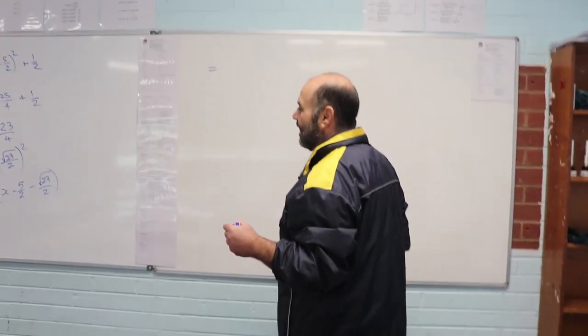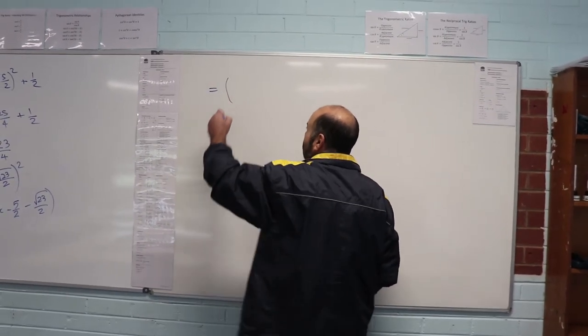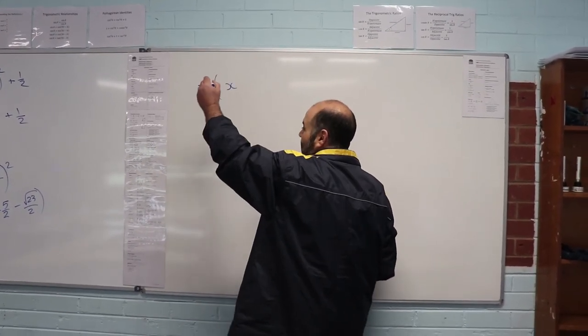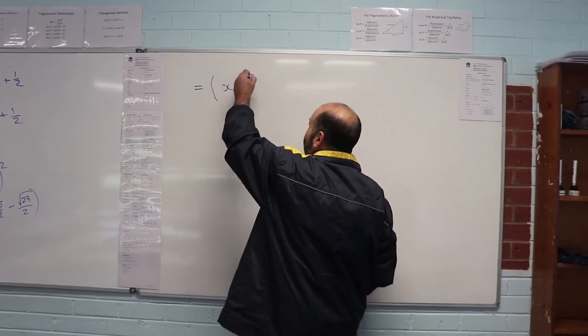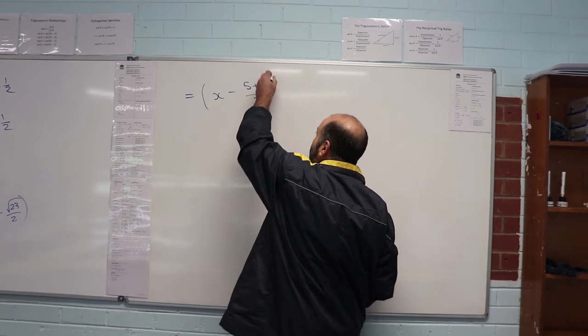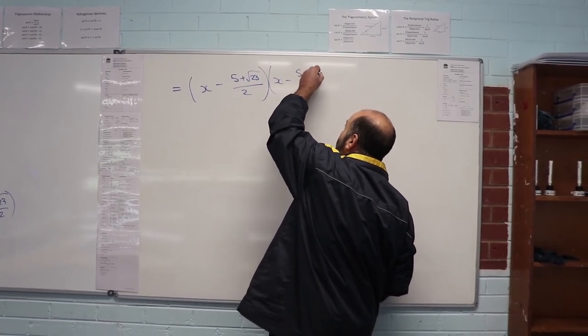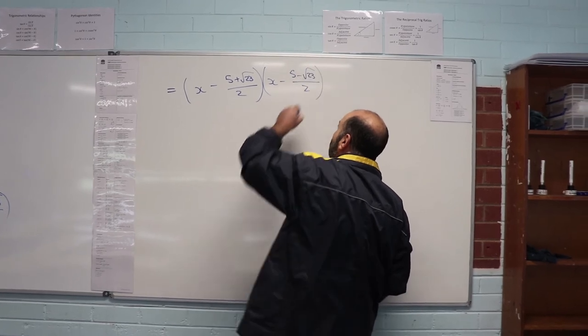So we can turn that into, well, it's just going to be (x - 5 + √23)/2 and (x - 5 - √23)/2.